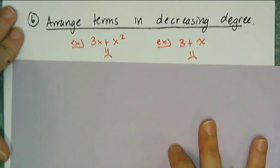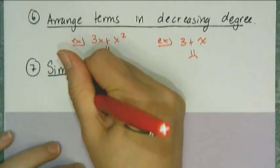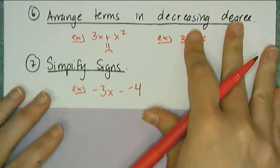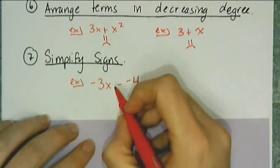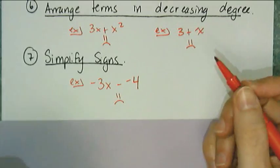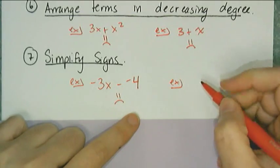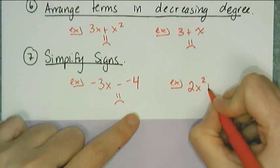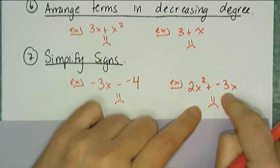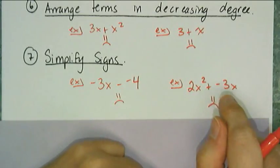The last rule is to simplify signs. If I have negative 3x minus negative 4, I don't like the minus-negative. I'll combine them using the definition of subtraction and make it a plus. Likewise, I don't want to see plus-negative; I want to see just subtraction. Many of you already do this, which is great — we just have to get in the habit of always doing it.